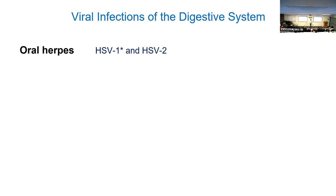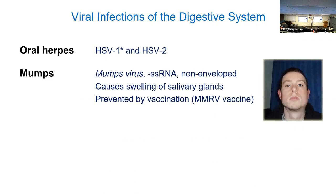Let's talk about viral digestive infections. We talked about herpes simplex 1 and 2 — causing cold sores and genital herpes. Another one worth mentioning is mumps. It's part of the MMR vaccine, and we don't see it often because of vaccination. When it does occur, it infects the salivary glands and can lead to massive swelling of the face and salivary gland area.